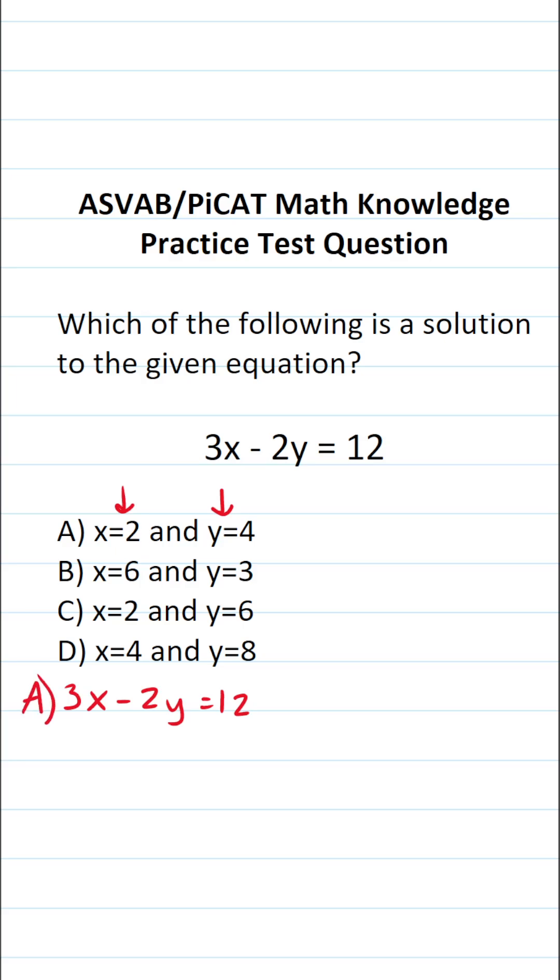Let's start with A. A says let x be 2 and y be 4. Let's plug those in accordingly. This becomes 3 times 2 minus 2 times 4 equals 12. 3 times 2 is 6, minus 2 times 4 is 8, equals 12.